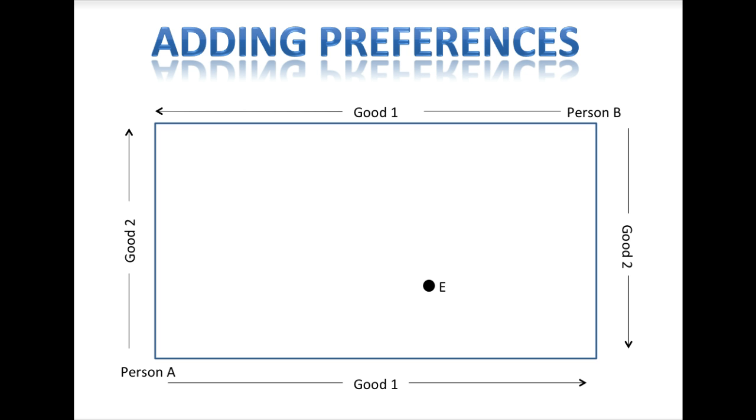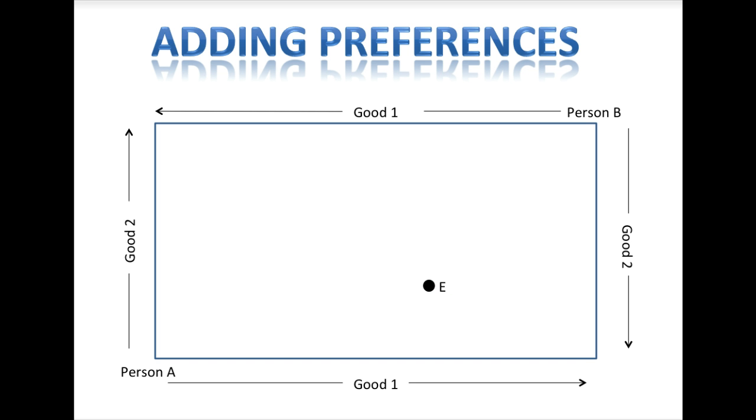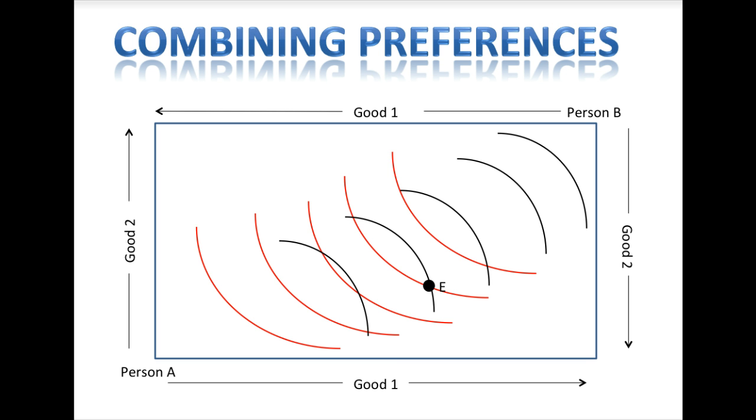We will represent Person A's preferences using indifference curves, which will start at the bottom left and move up and to the right. Thus, points to the northeast of the endowment point represent points that Person A likes better than her endowment. Adding Person B's preferences works similarly. Person B's least preferred bundle is at the top right-hand corner of the box. His indifference curves will start there and will move down and to the left. Thus, the better bundles for Person B will be to the southwest in the box.